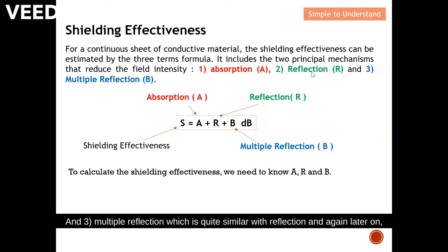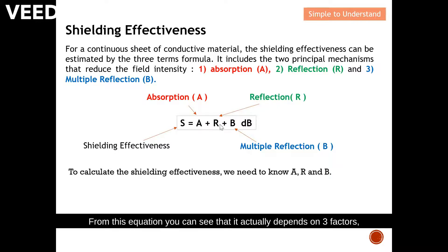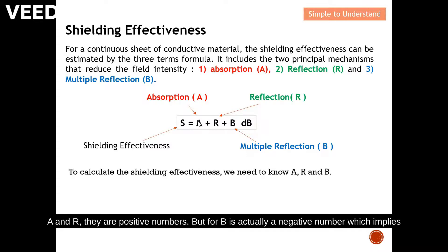The third term is multiple reflection, which is quite similar to reflection — I'll explain the difference later on. This is the overall shielding effectiveness equation: SE depends on three factors — absorption (A), reflection (R), and multiple reflection (B). A and R are positive numbers, but B is actually a negative number.